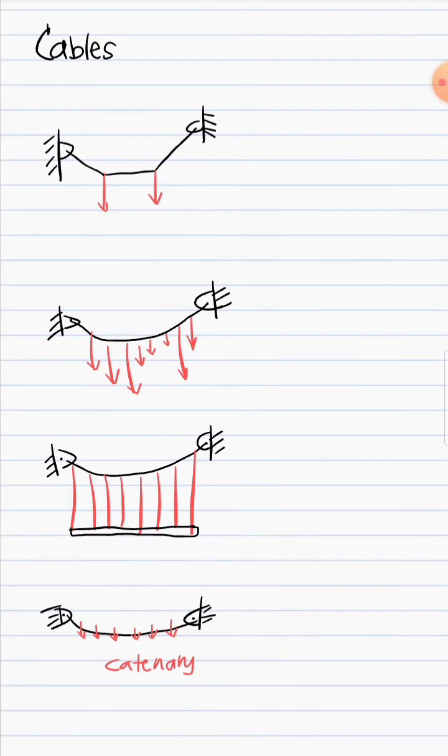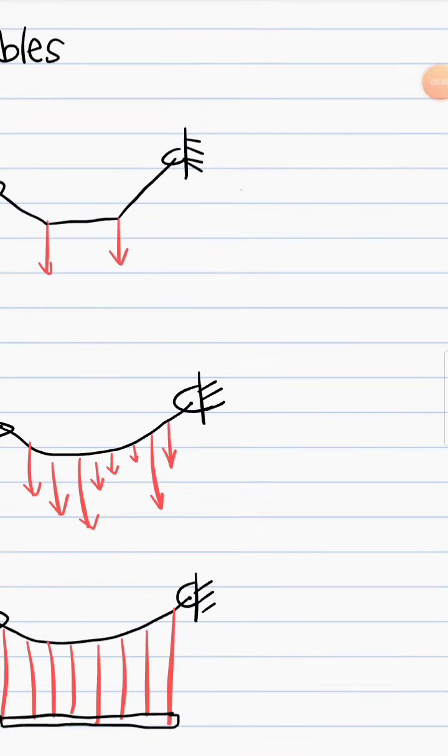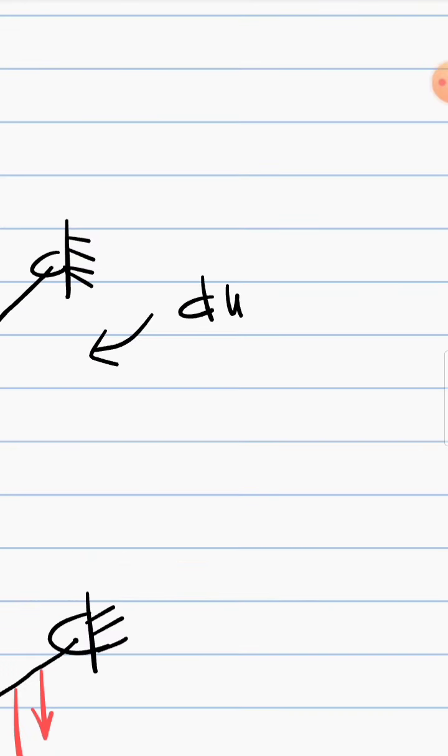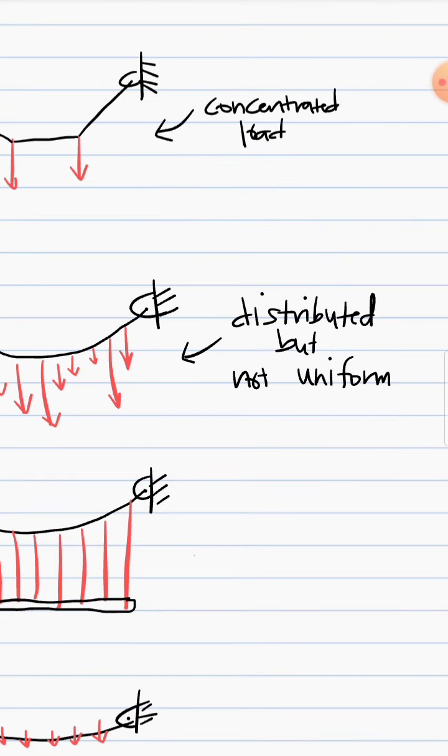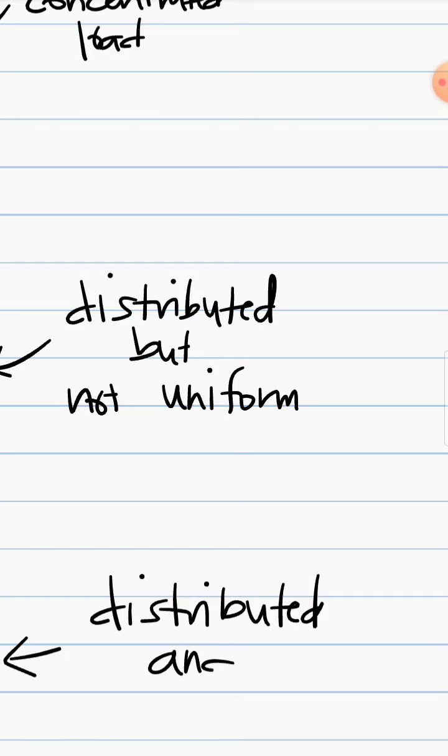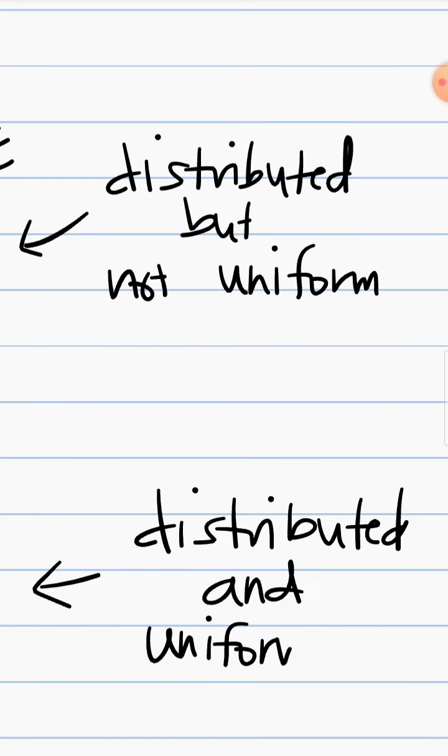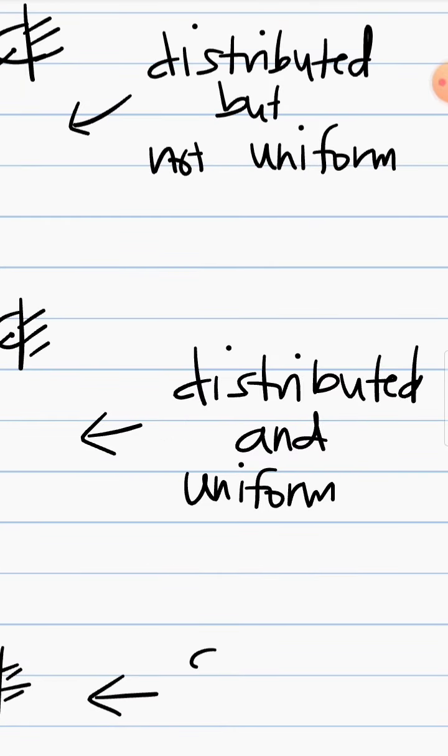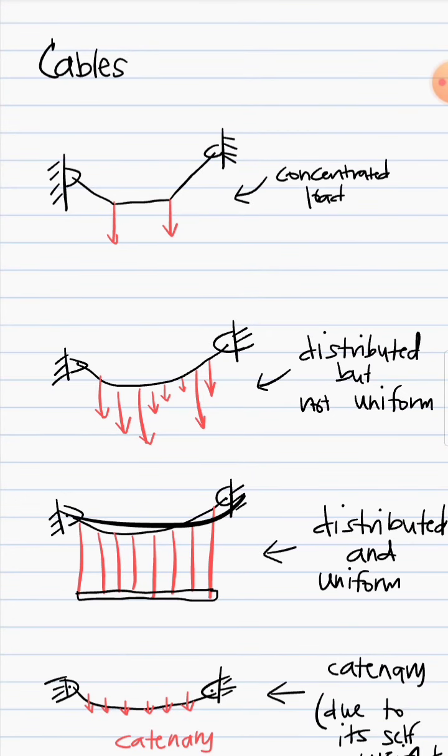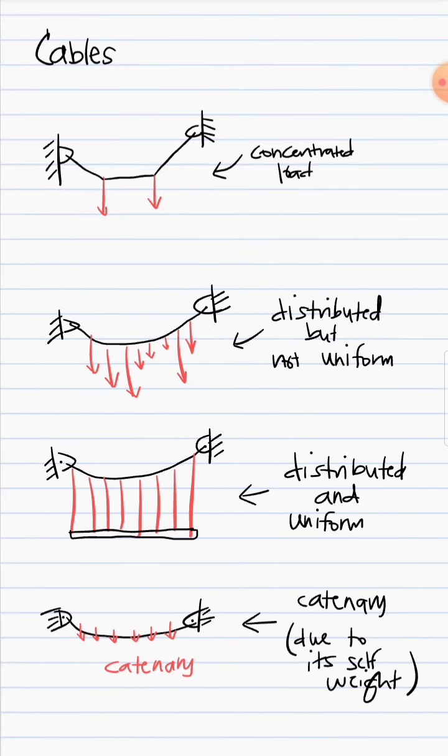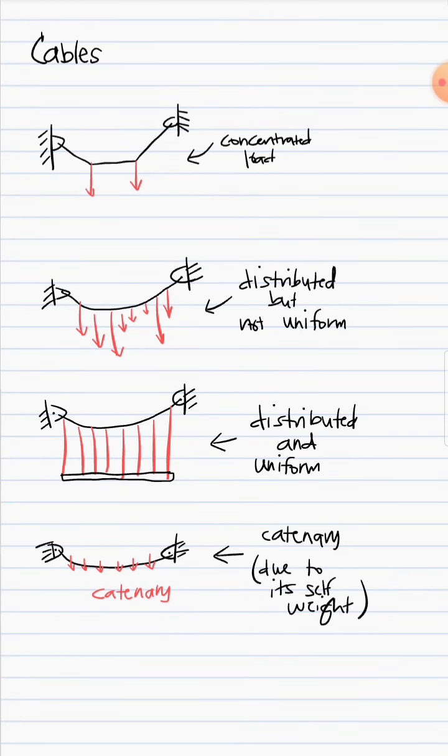But what's important here is that we know how to analyze each. So the first type we have is due to or subjected to concentrated load, this one distributed, and this one distributed and uniform, and finally the catenary due to its self-weight. These three we assume that their weight is negligible compared to the loads they carry, and this one we consider its weight. So that's the main classification of cables based on external loads.